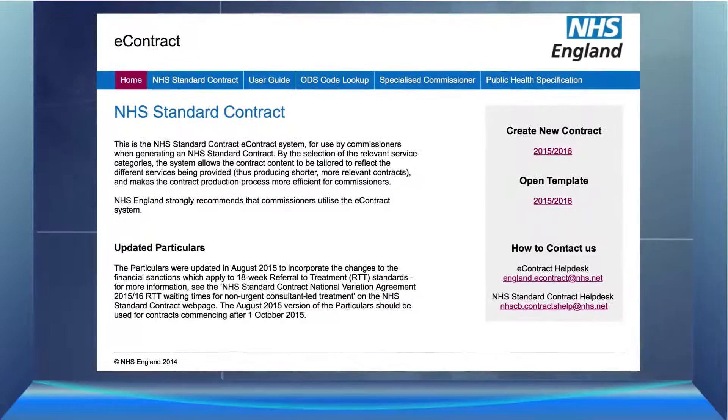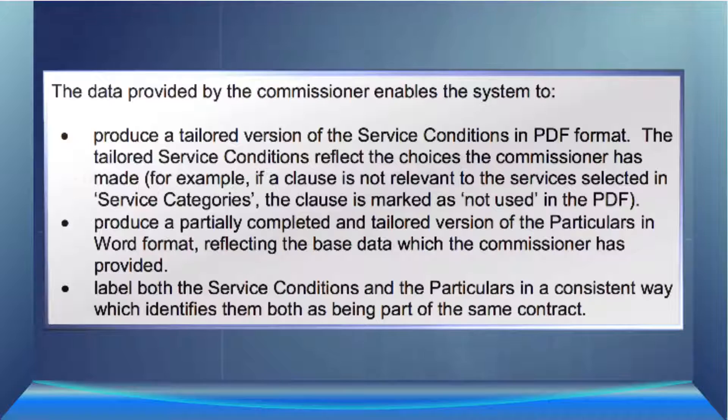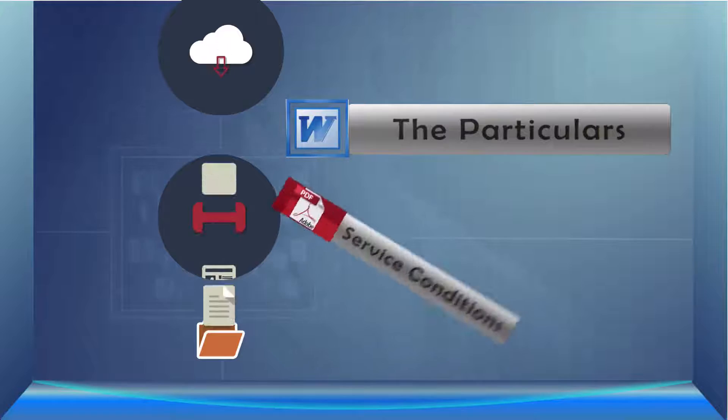What the e-contract does do can be seen in this extract from the guide, from which you can see it produces a tailored version of the service conditions in PDF format. It's in PDF format because service conditions cannot be varied. It produces a partially completed and tailored version of the particulars in Word format. And it labels the service conditions and particulars in a consistent way throughout the contract. The commissioner then stores the documents locally after downloading the service conditions and particulars from the system. The missing fields in the particulars can then be completed to accompany the PDF version of the service conditions, along with a standard list of general conditions.